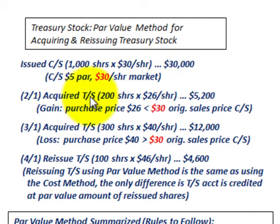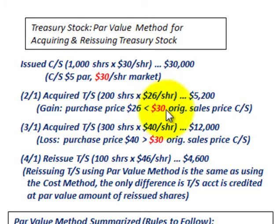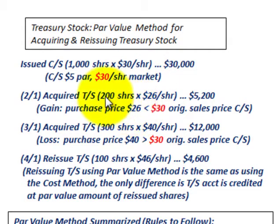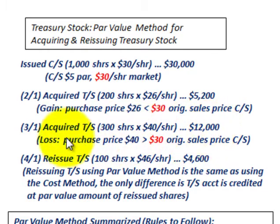On 2-1, we acquired 200 shares of treasury stock at $26 per share, equating to $5,200. That's a gain because the purchase price of $26 is less than the $30 original sales price of the common stock. On 3-1, we acquired 300 shares at $40 per share, equating to $12,000. This is a loss because the purchase price of $40 is greater than the $30 original sales price.